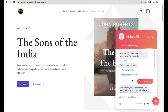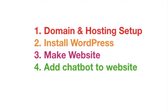We will also explain more features about this chatbot, so please watch this video from start to end. To add a chatbot to your WordPress website we will follow four steps: first, acquire domain and hosting; second, install WordPress; third, make a website with WordPress; and fourth, add the chatbot. If you already have a WordPress website, skip the first three steps and forward to the 10-minute mark.